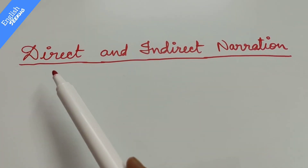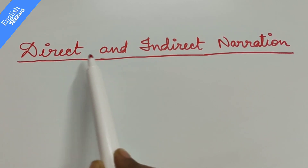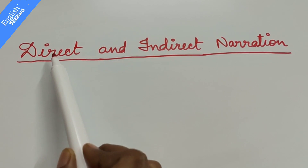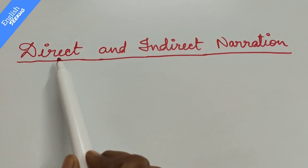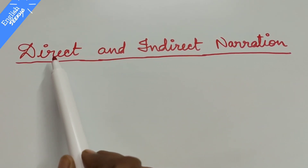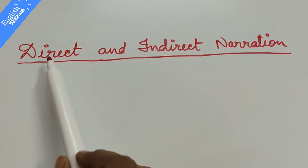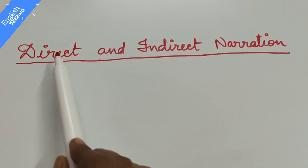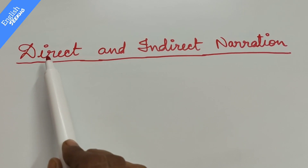Before we start, we should have a clear understanding of the topic itself — what is direct narration and what is indirect narration. Direct means when you say something directly. Direct narration means the speaker is present there and the speaker himself is conveying his message. Matlab, ye direct narration woh hai jahan par kehne wala vakta swayam upasthit hai aur apni baat ko swayam apne shabdoh mein keh raha hai.